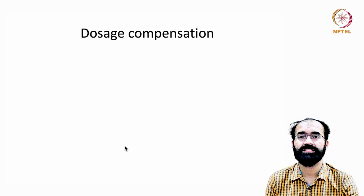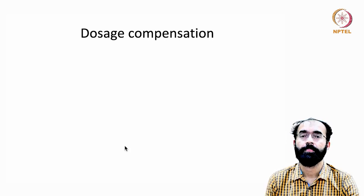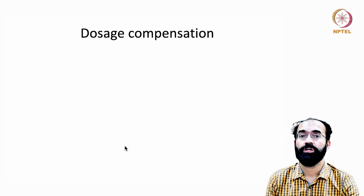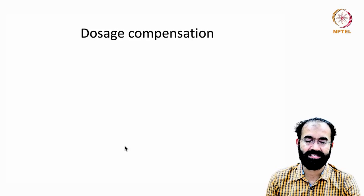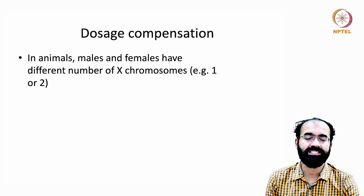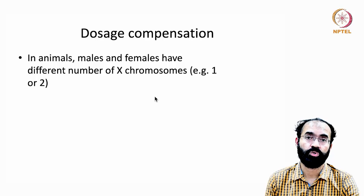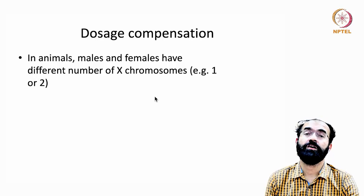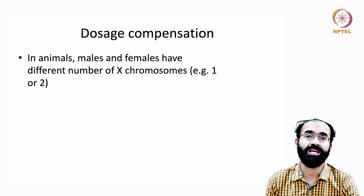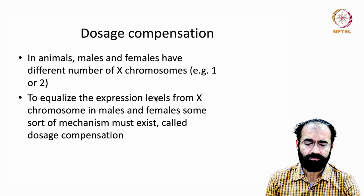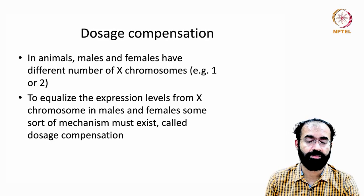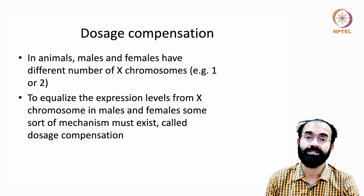These are all examples of dosage compensation in nature. At the molecular level there is also dosage compensation. In animals, males and females have different numbers of X chromosomes — either one or two. Human males have one X chromosome whereas human females have two, so to equalize expression levels from the X chromosome in males and females, some mechanism of dosage compensation must exist.